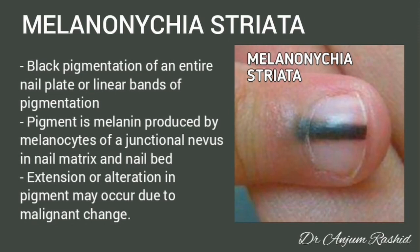Melanonychia striata: it is black pigmentation of an entire nail plate or a linear band of pigmentation. This pigment is melanin produced by melanocytes of a junctional nevus present in the nail matrix and nail bed. Melanonychia striata is of no significance, but if extension or alteration in the pigment occurs, this may be due to malignant change and a biopsy should be taken.